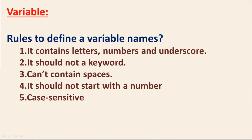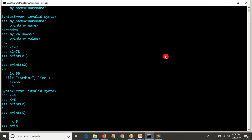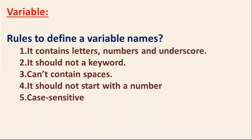One more point: you should not start a variable name with a number, but you can start with an underscore — for example, '_x equals some number' is valid. These are the important rules to remember when defining variable names while writing your Python scripts.